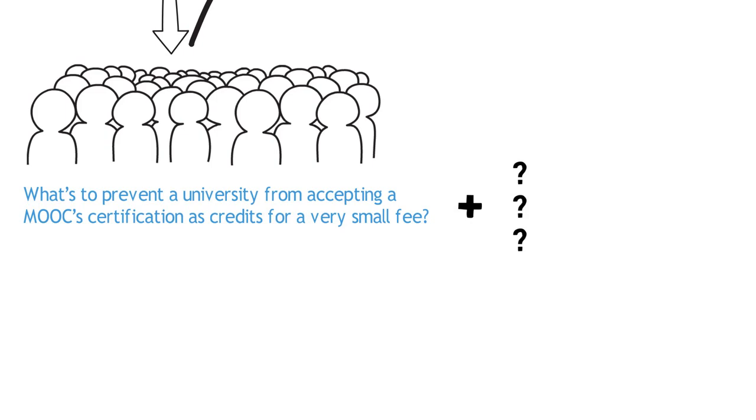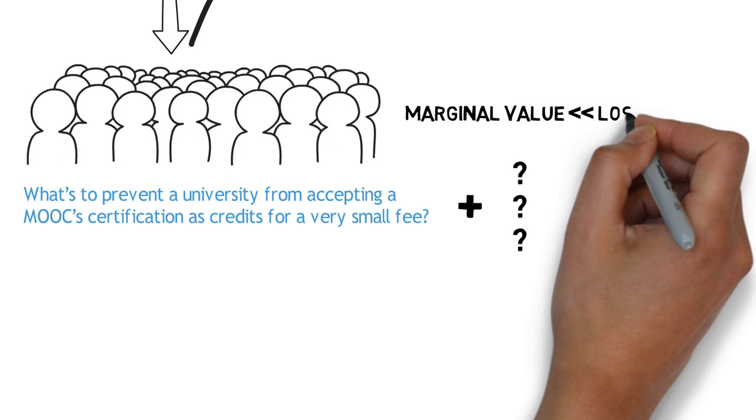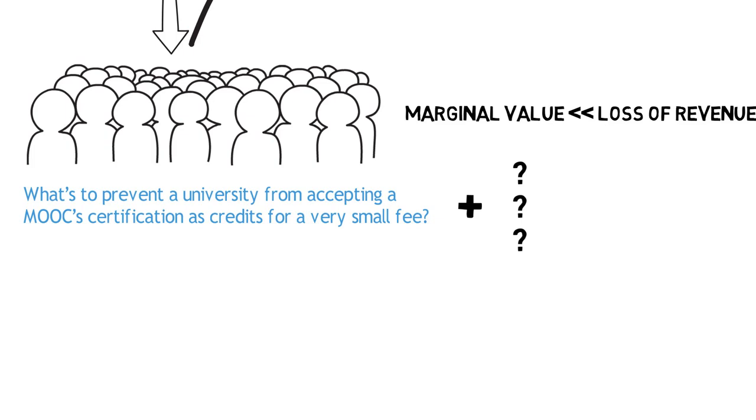Even granted any marginal value these universities might exact on so many students, the same will be dwarfed by the loss of revenue to the network of higher education as a whole, when the marginal cost of teaching a given course to the hundred-thousandth student online is otherwise zero. Perhaps the question for universities is no longer who will implement these changes, but who will implement them first?